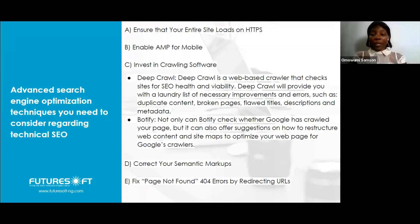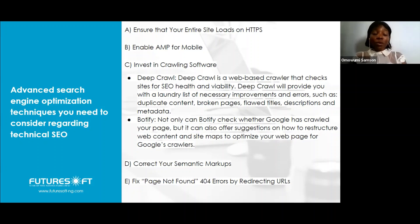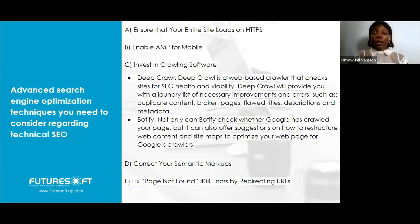You need to understand which links are broken, which pages are duplicated, and which pages have flawed title descriptions or meta titles, then fix all of these. Remember, meta descriptions and meta titles are for the search engine, not something that shows on your website itself — they help the search engine understand what your web page is about. We also have Botify: not only can Botify check whether Google has crawled your page, but it can also offer suggestions on how to restructure web content and sitemaps to optimize your pages for Google crawlers.